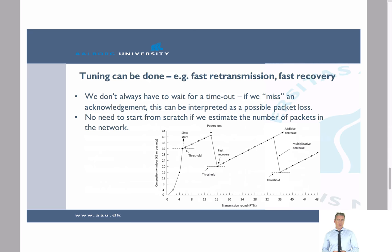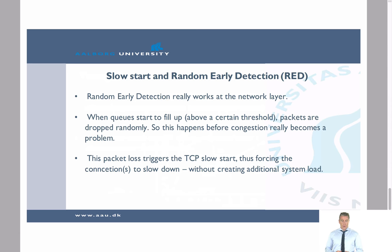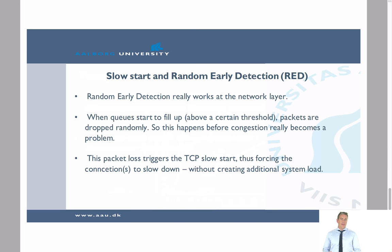Another topic is random early detection, which works at the network layer. The idea is that when a queue — such as a router queue — starts to fill up but before it is completely full, we can act early. If the queue completely fills up, we start dropping packets, which triggers TCP slow start. But going from all packets being received to significant packet loss is undesirable, so we want to react earlier.